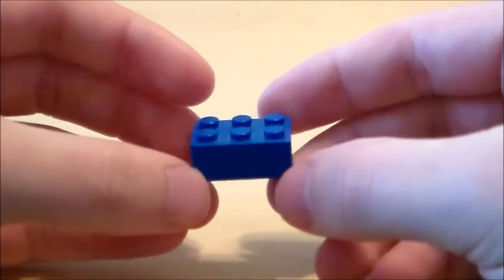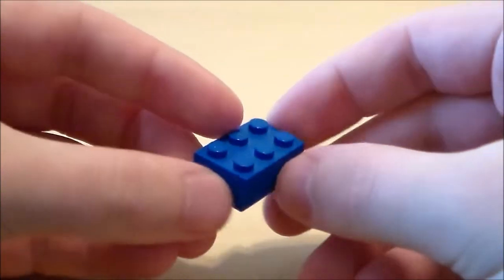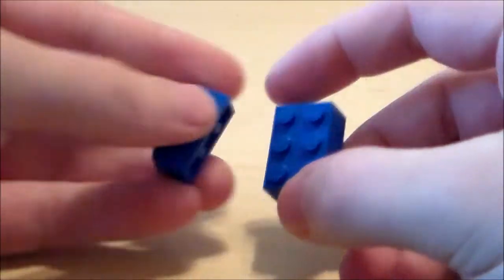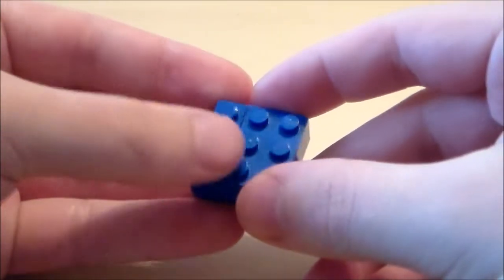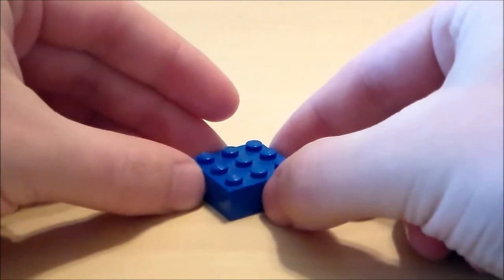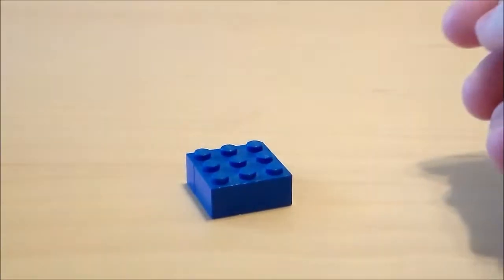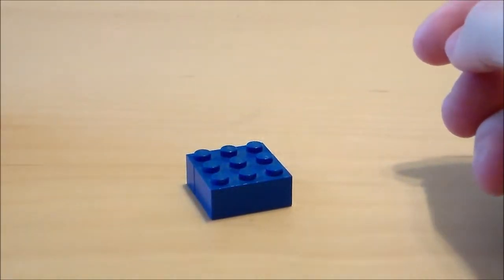To start off the Glow Squid, I'm going to get a 2x3 blue brick, as well as a 1x3 blue brick. This will be the base that I put everything onto, so I'm going to do that right there, and then next up...